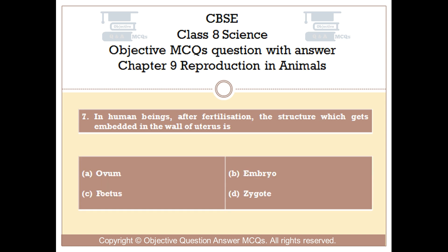Question number 7. In human beings, after fertilization, the structure which gets embedded in the wall of the uterus is: Option A: Ovum. Option B: Embryo. Option C: Fetus. Option D: Zygote.